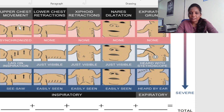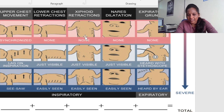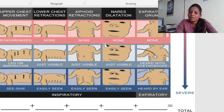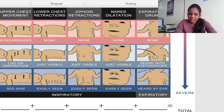Upper chest and lower chest movements are included. Xiphoid retractions refer to how the xiphisternum in the middle is retracted. Nasal dilation refers to how much the nostrils are flaring. Expiratory grunt means when you hear sounds — what kind of sounds are heard or not heard. Based on that, we evaluate the severity of the respiratory distress.